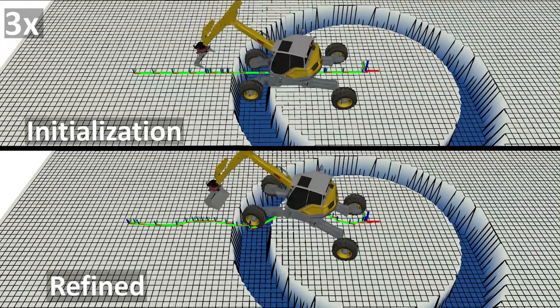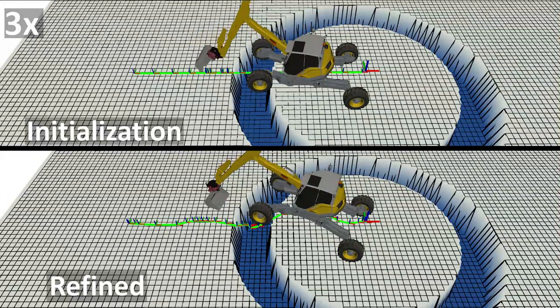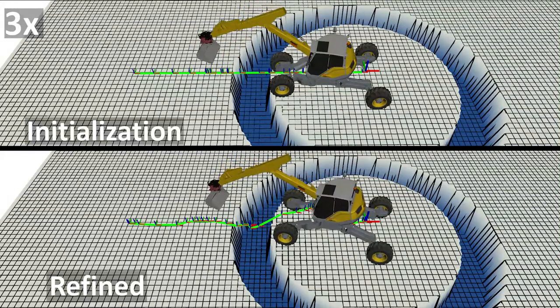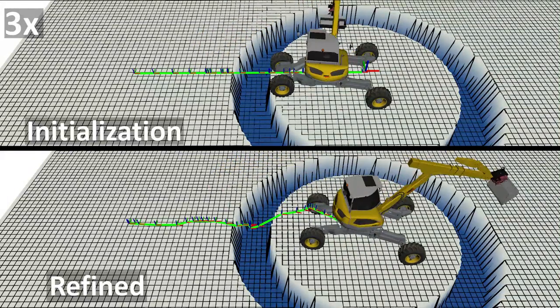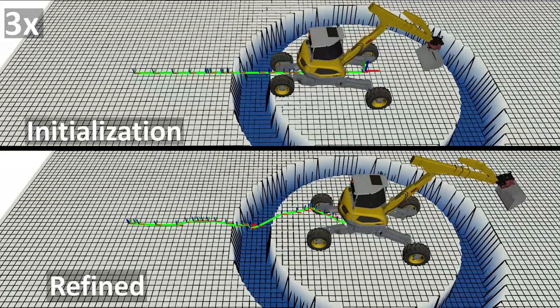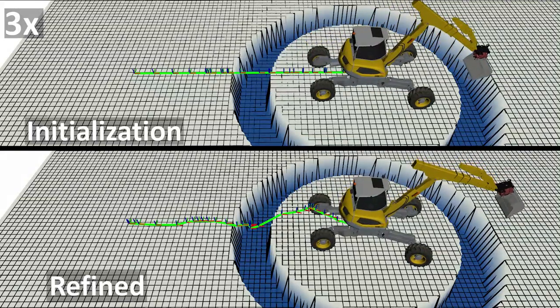Subsequently, the optimization-based refinement step satisfies all the system constraints, refining the plan with optimization to ensure physical motions.